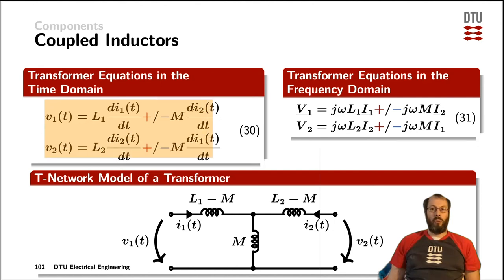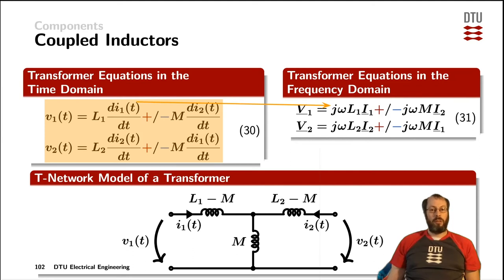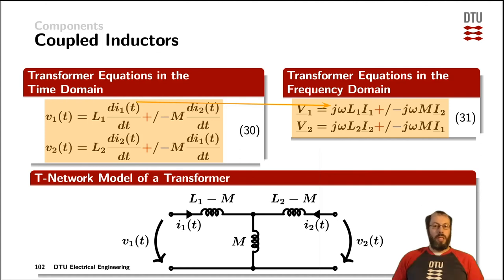Those were the transformer equations in the time domain. As we have learned from inductors, the time derivative in the time domain can be expressed as multiplication by j times omega in the phasor domain. So equation 31 expresses exactly the same as equation 30, just in the phasor domain. The equivalent T-model network of a transformer is shown here — the impedance seen from the left-hand side is L1 minus M, and leaving the secondary side open gives L1 minus M plus M, which equals L1.